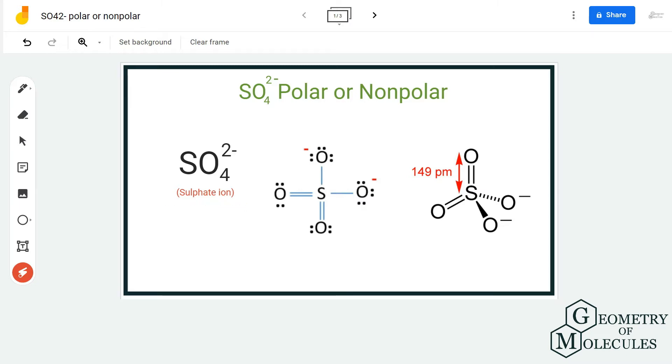look at its Lewis structure. So this is the Lewis structure for SO4 2- ion, and as there is a minus charge over here, it means that it is accepting two extra electrons. Now, the oxygen atoms